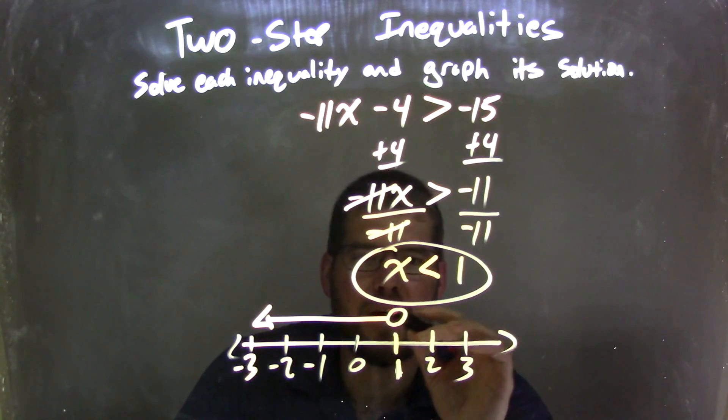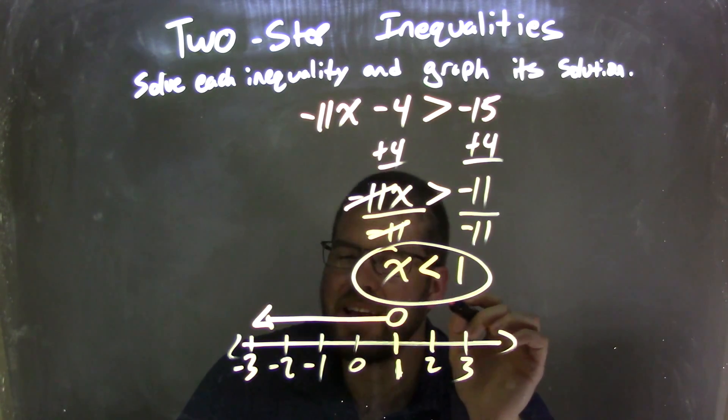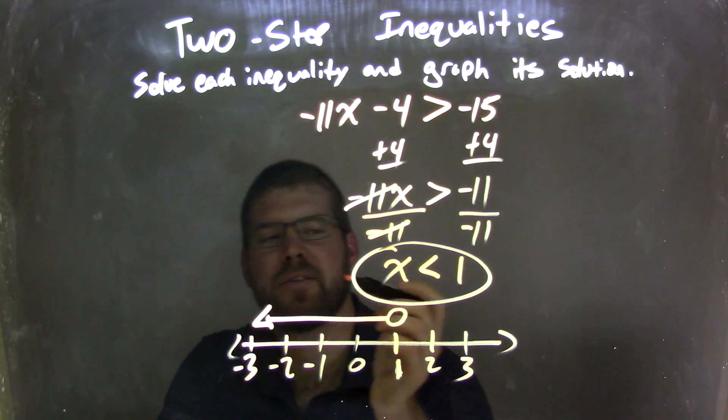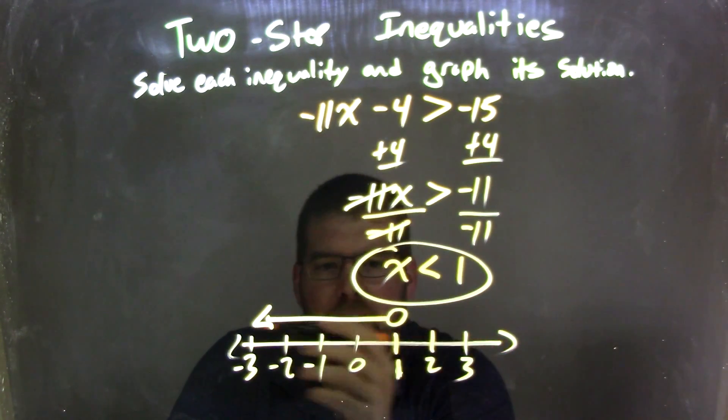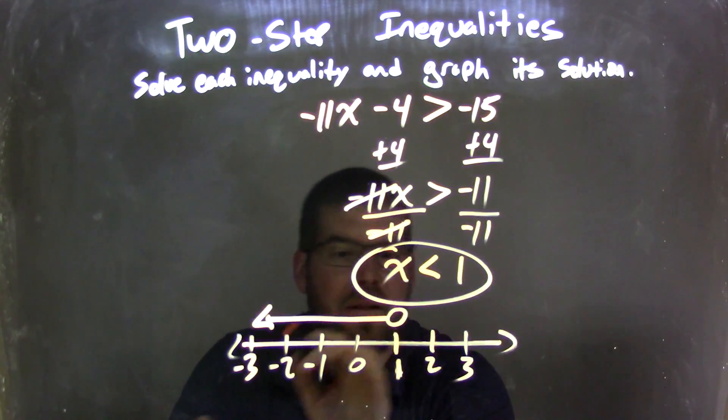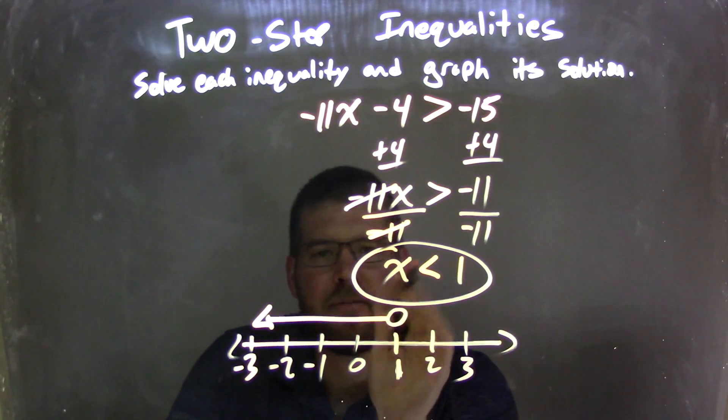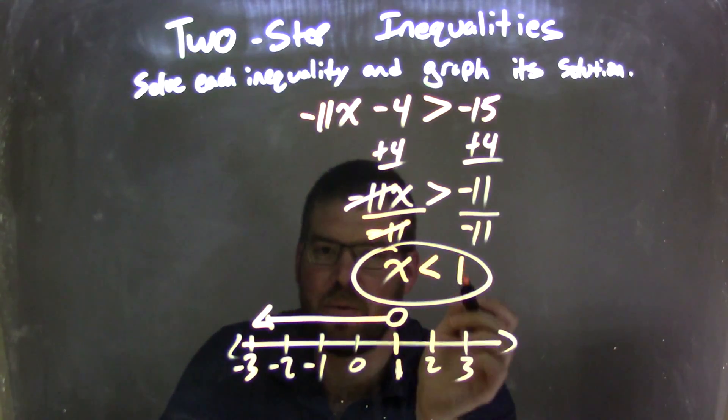I need to graph it, so I have an open circle at 1 because it's not equal to, it's just less than, and my arrow goes to the left because x is less than 1. So we go to the left for all the values where x is less than that 1. So now our graph matches our answer, which is x is less than 1.